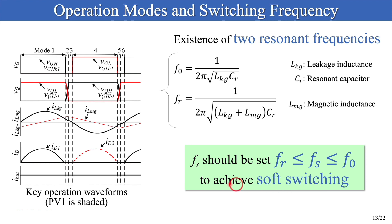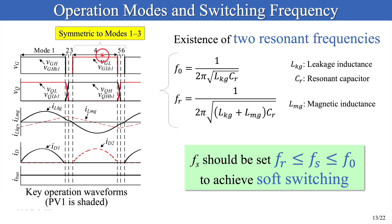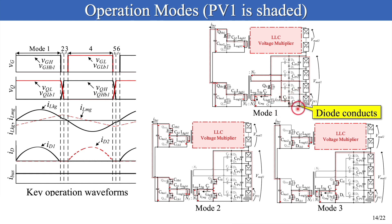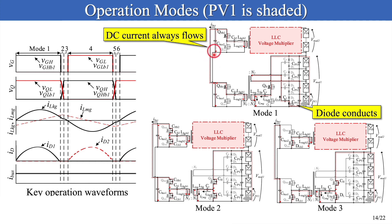The left-hand figure shows theoretical key operation waveforms when PV1 is shaded. Operation modes are divided into six modes. Since the first three modes are symmetric to the last three modes, only the current flow direction of the first three modes will be described. The operation is very similar to ordinary LLC converters. As the switches turn on and off, the resonant current flows. In the proposed converter, diodes connected in parallel with the shaded panel only conduct, while other diodes do not. So this topology supplies current to the shaded panel only, and DC current always flows to the shaded module through the isolated bus.